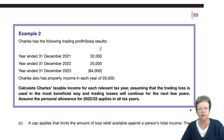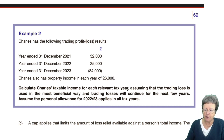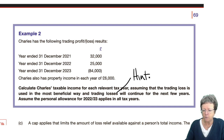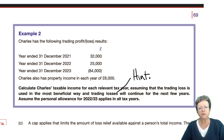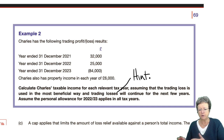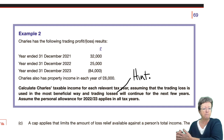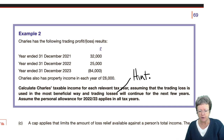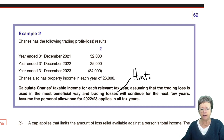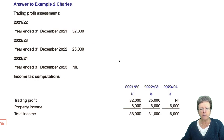Trade losses will continue for the next few years — this is a hint that you should look at the current year and/or previous year before carrying it forward, because if he's going to continue making losses, you won't get tax relief on that for some time. We are to assume that the personal allowance for 2022-23 applies in all tax years, which is quite common in exam questions.